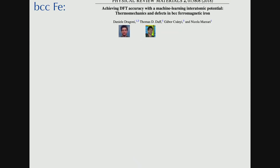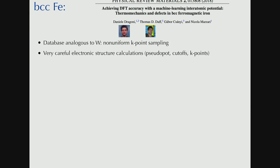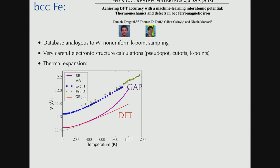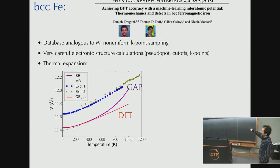We can go further. Here's iron, an even more difficult system. It's also BCC. Contributions from here are from Daniel Dragone and Nicola Marzari who are also here. And it was much harder to do than tungsten. It was so expensive to get the DFT data that we had to use non-uniform K-point sampling and pay extreme care when setting the DFT parameters. And when we did this first, and we computed the thermal expansion. This is experiment. This is the DFT which gets the volume slightly wrong, but otherwise qualitatively is correct.